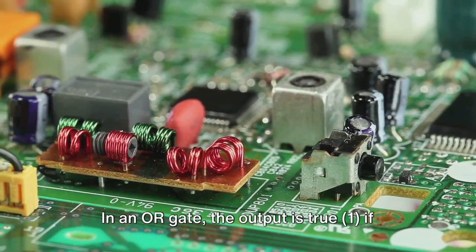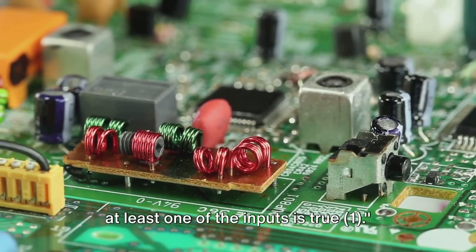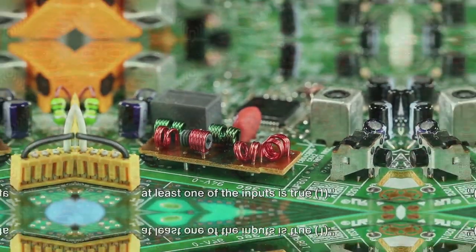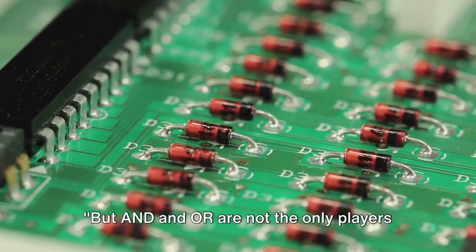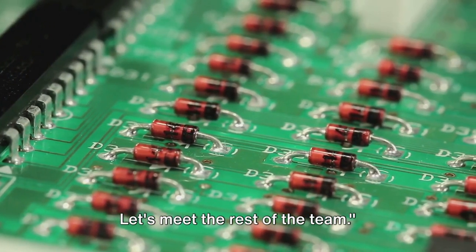In an OR gate, the output is true, 1, if at least one of the inputs is true, 1. But AND and OR are not the only players in the game. Let's meet the rest of the team.